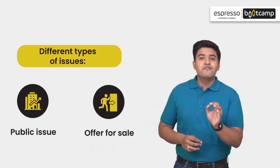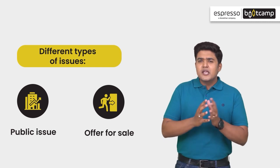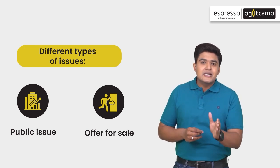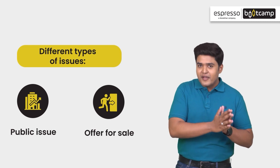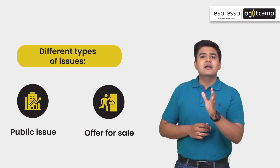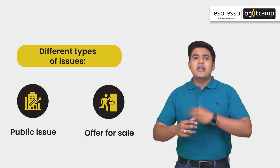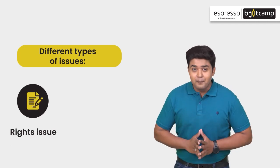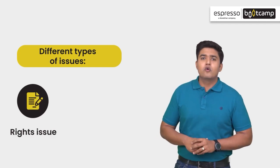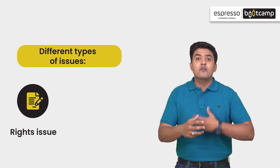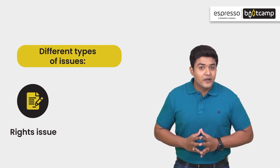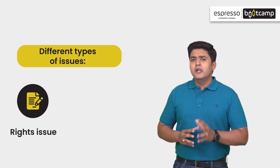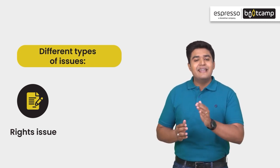Number 2: Offer for Sale. This is used when a venture capitalist, who invested in a company at its early stages, exits after the growth of the company. Number 3: Rights Issue. When a company issues a letter of offer to its existing shareholders, it is called a Rights Issue. Companies normally use this route to reduce debt.